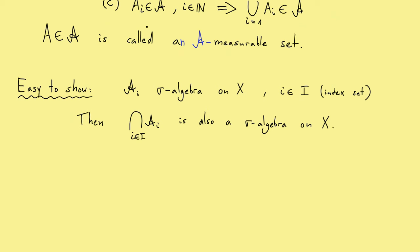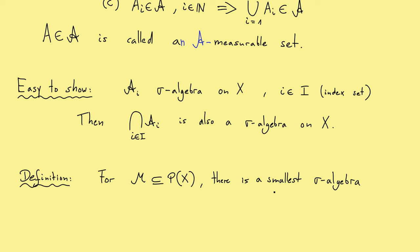This gives rise to the next definition. Let's fix a family of subsets — so we have a subset of the power set of a given set X, in other words just a collection of some subsets which don't have to form a sigma algebra yet. The result is that we can form a sigma algebra out of this collection M, and we can choose the smallest sigma algebra — smallest with respect to set inclusion — that contains M. We form this by taking the intersection of all sigma algebras A that contain our set M.